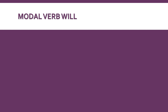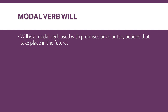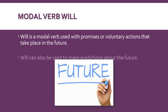First of all, what is modal verb will? Will is a modal verb used with promises or voluntary actions that take place in the future. Will can also be used to make predictions about the future.